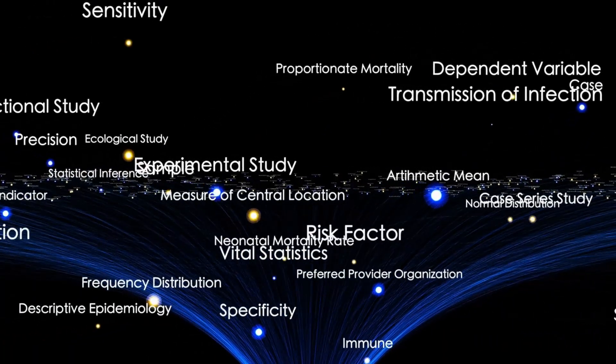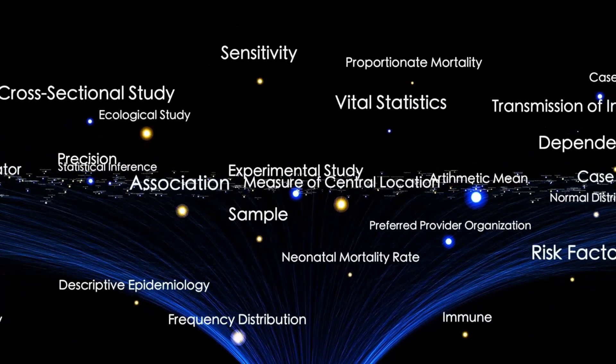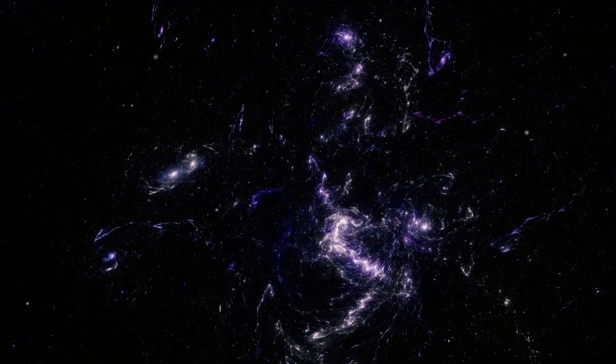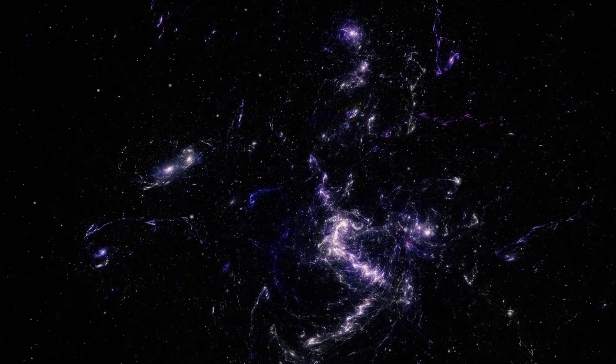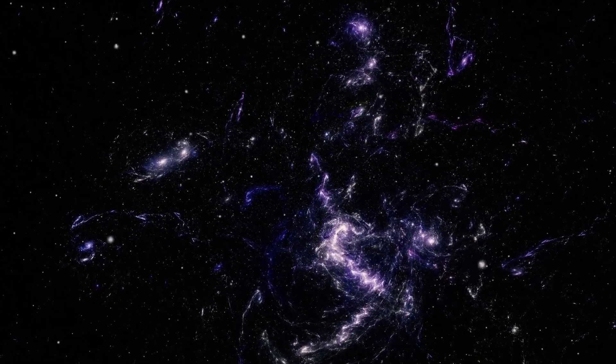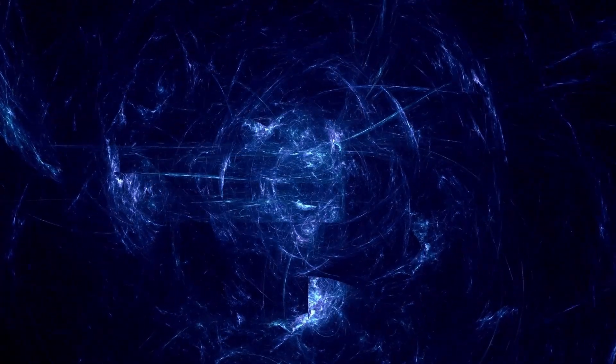NIRSpec and MIRI instruments detected traces of synthetic polymers, molecules that resemble Earth-made plastics, and carbon nanotubes intermixed with natural gases. These aren't the kinds of structures that form in vacuum or during cometary heating. These are engineered materials.